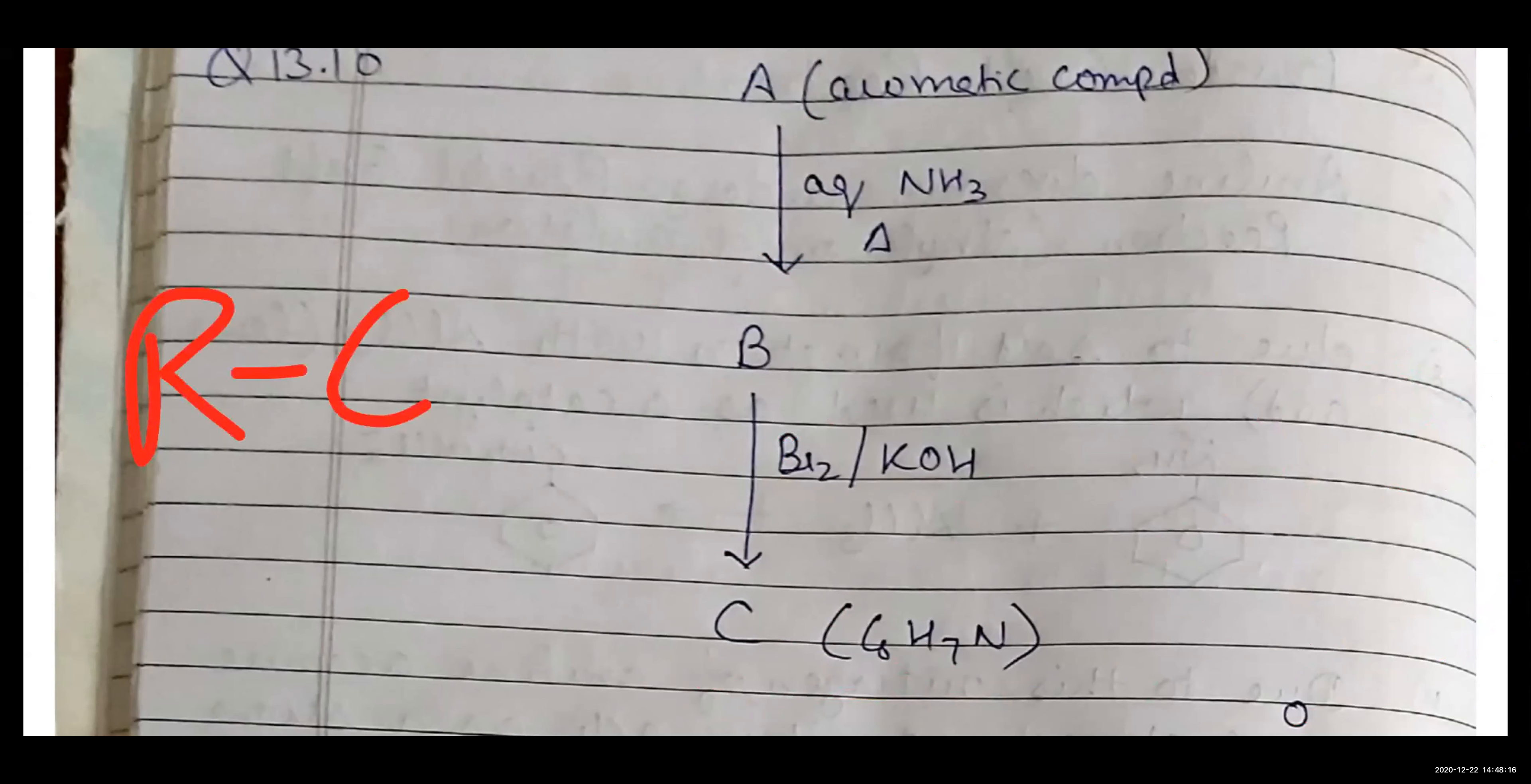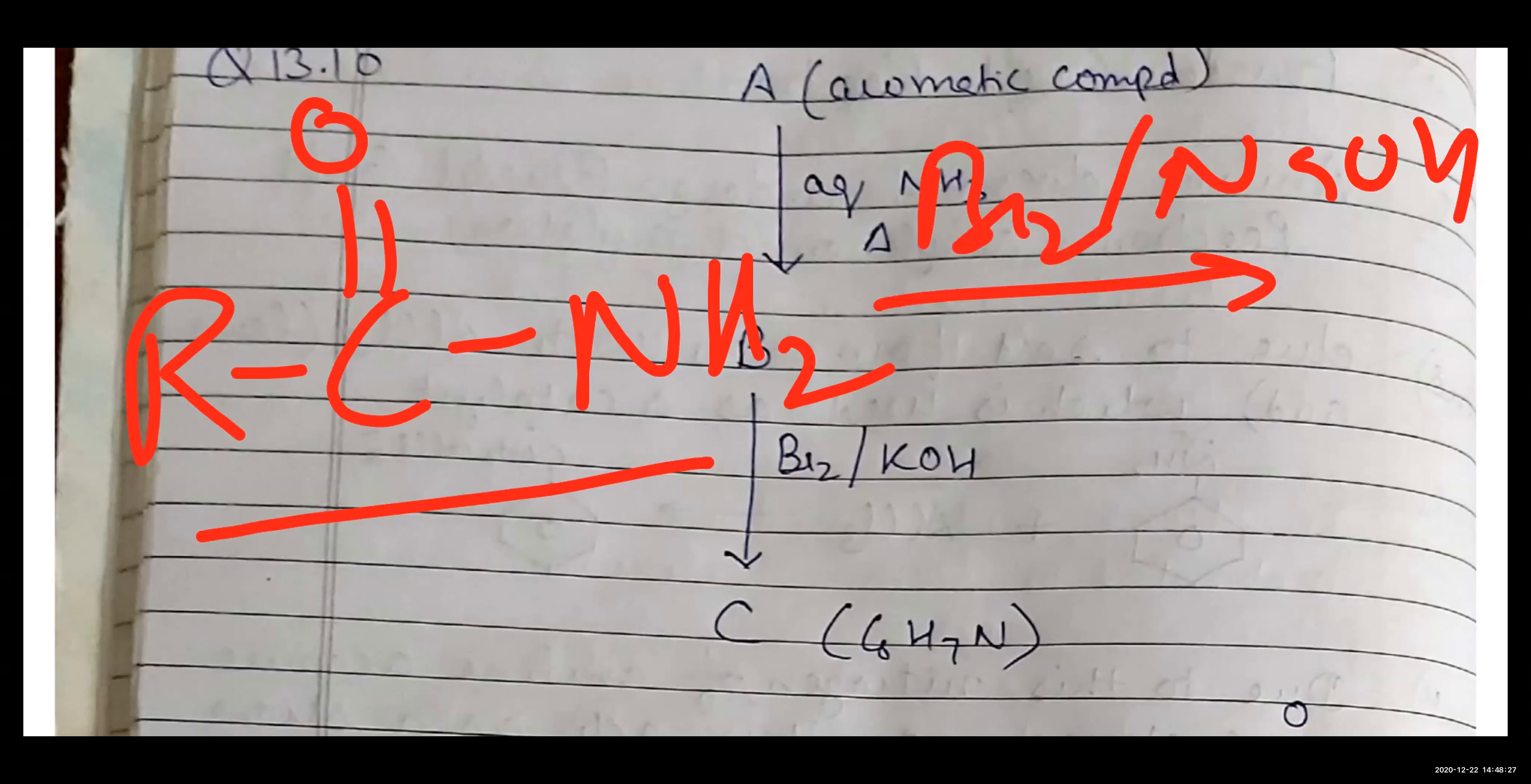I have told you this. So keep your attention. If you have one CONH2 group, amide group, if you add bromine and NaOH or KOH, what happens in this? What happens is NH2 group. It's degradation. So this is the same reaction. If you see here.